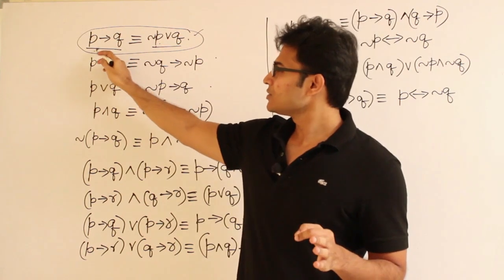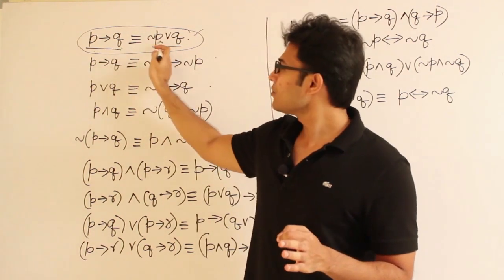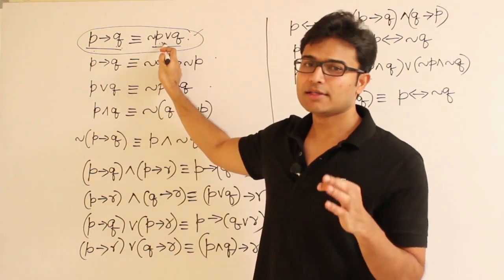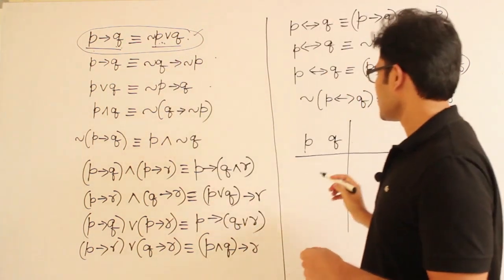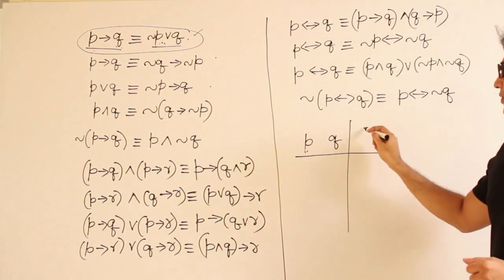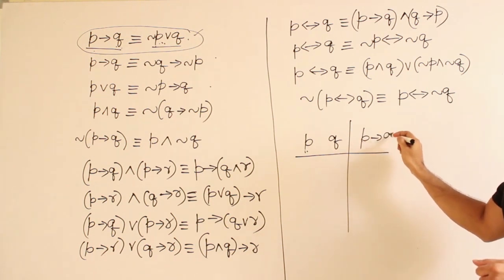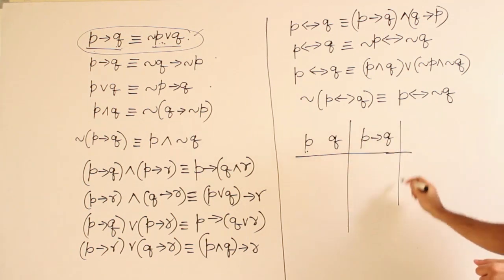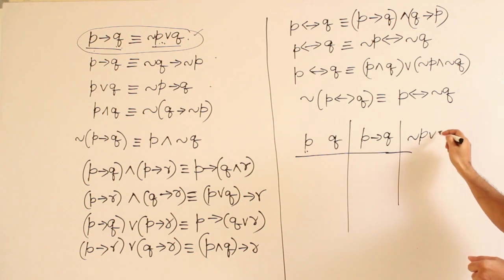This equivalence says that this expression is equivalent to this expression. What they mean is, if you go for assignments of P and Q, both of them are supposed to give the same truth value. So which means, if I take P, Q, if I write P implies Q, and if I write negation P or Q,